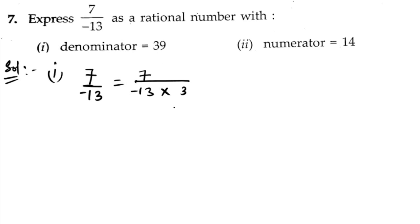But the denominator is positive, that means we need to multiply with minus 3. So 7 into minus 3, we will get plus into minus is minus, 7 threes are 21. So minus 21 by minus into minus is plus, 13 threes are 39.